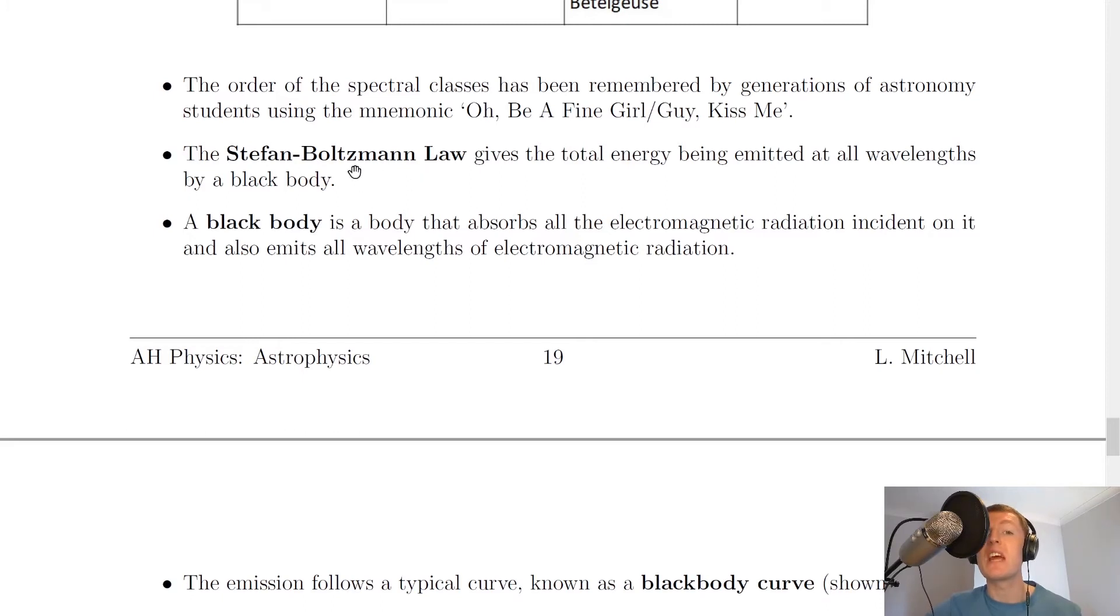It then says the Stefan-Boltzmann law gives the total energy being emitted at all wavelengths by a black body. A black body is something you saw at higher level. A black body is a body that absorbs all the electromagnetic radiation incident on it and also emits all wavelengths of electromagnetic radiation. So it absorbs and emits all EM radiation.